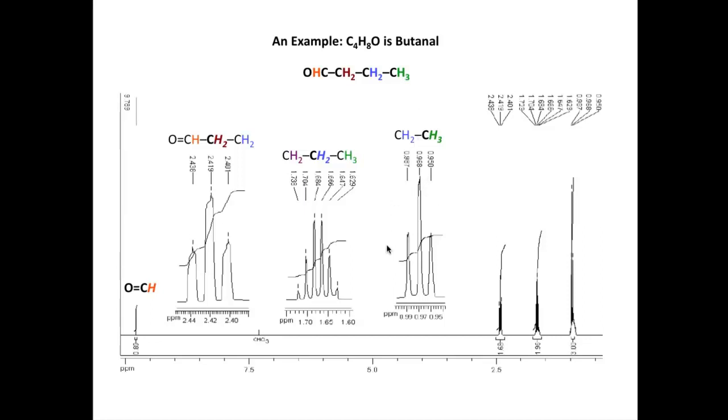Hydrogens in blue, associated with the signal around 1.67. In brown, associated with the signal around 2.4. And finally, the aldehyde signal way up near 10 ppm.